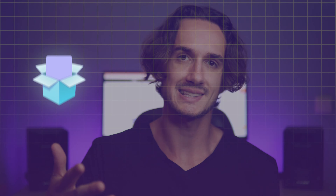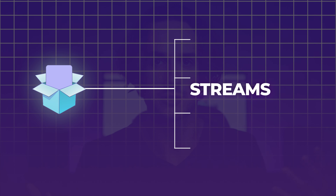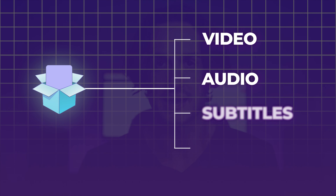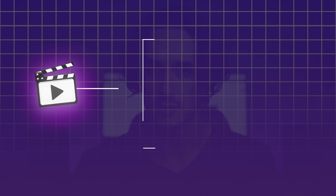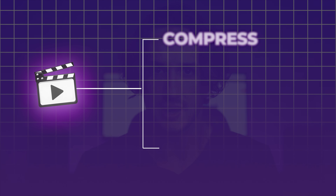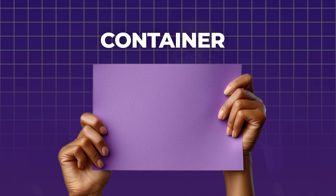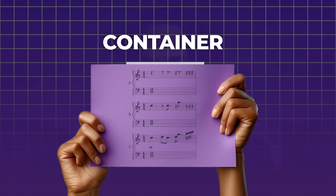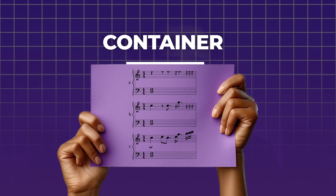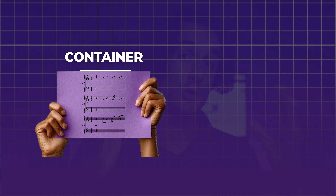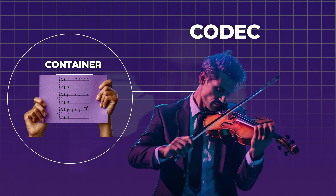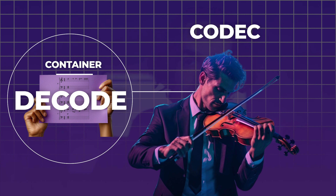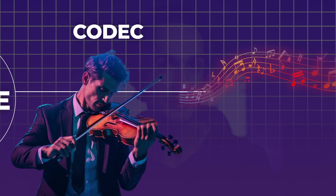A video file consists of two main elements: the container and the codec. The container acts like a wrapper that holds various streams of data, including video, audio, subtitles, and metadata. Codecs, on the other hand, are algorithms used to compress and decompress these streams. Imagine the container as a piece of sheet music where the notes of a melody are written, as well as instructions for dynamics and multiple layers. The codec is the musician that can read that sheet music and decode those notes to turn it into beautiful music.